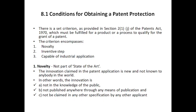The invention should not be in the public domain. It has to be not part of the state of the art — meaning articles already available in the public domain. The innovation claimed in the patent application has to be new and not known to anybody in the world. In three subcategories: it should not be in the knowledge of the public, meaning the particular idea, product, process, or design should not be available in public knowledge.